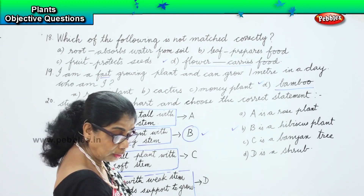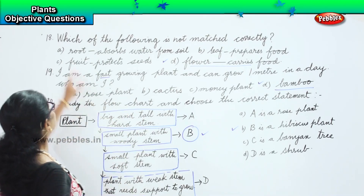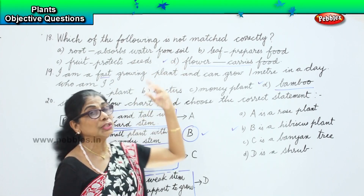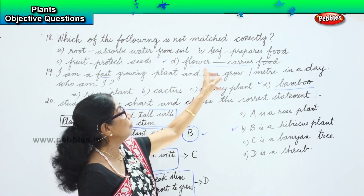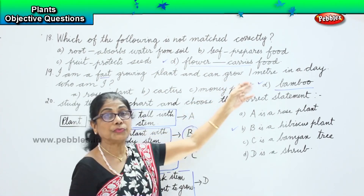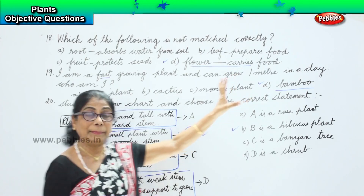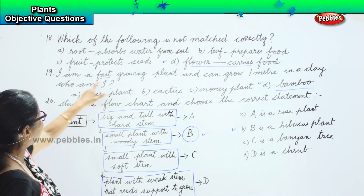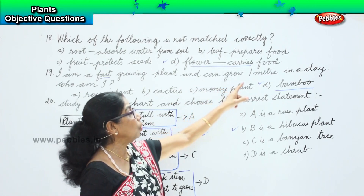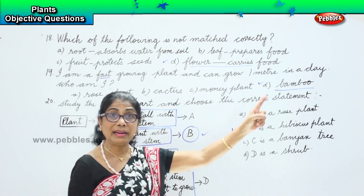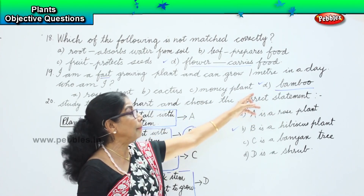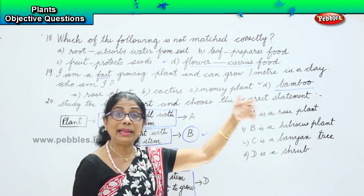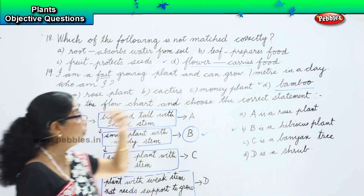Let us look at all three questions. The 18th one: which of the following is not matched correctly? Flower carries food — that is not matched correctly, it is mismatched. The 19th one: I am a fast-growing plant and can grow one meter in a day — who am I? A bamboo. Bamboo can grow one meter a day and is the fastest growing plant.